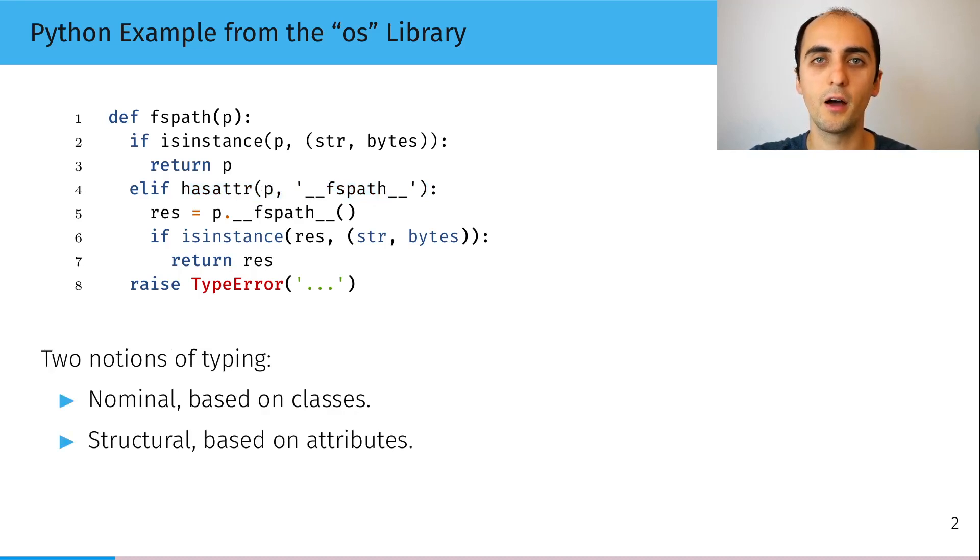So already from this example, we can see that there are two notions of typing in Python: a nominal one based on classes and a structural one based on attributes, usually called duck typing in the Python community.